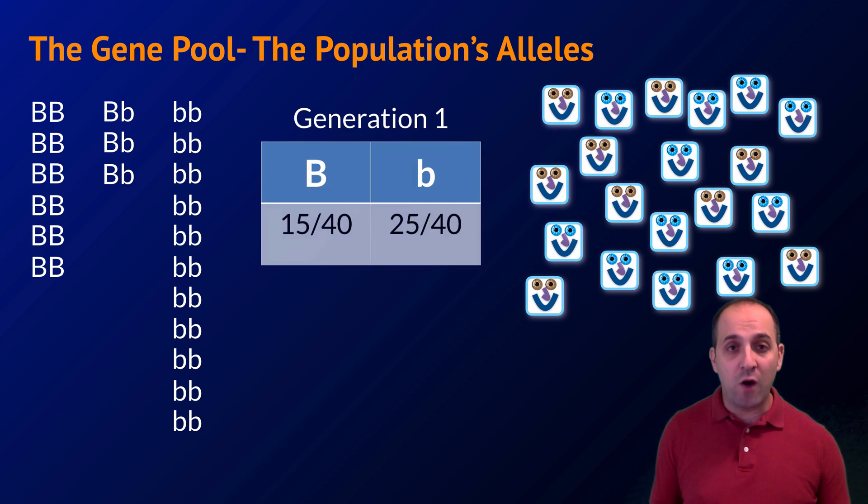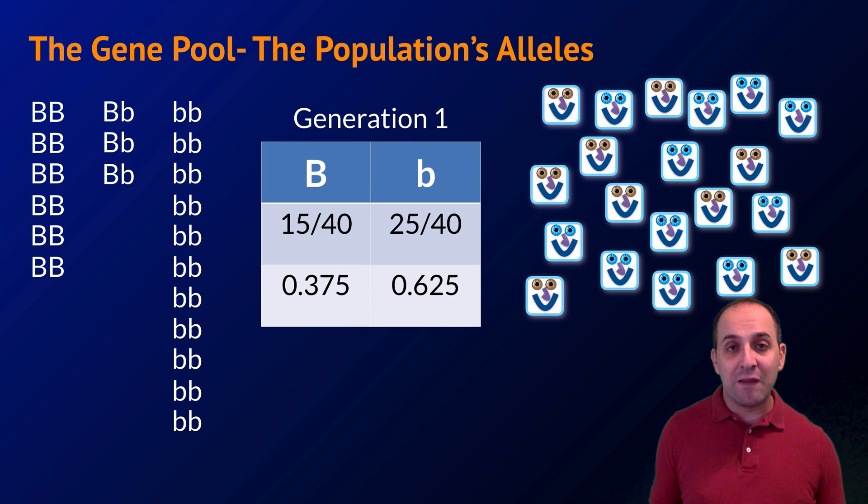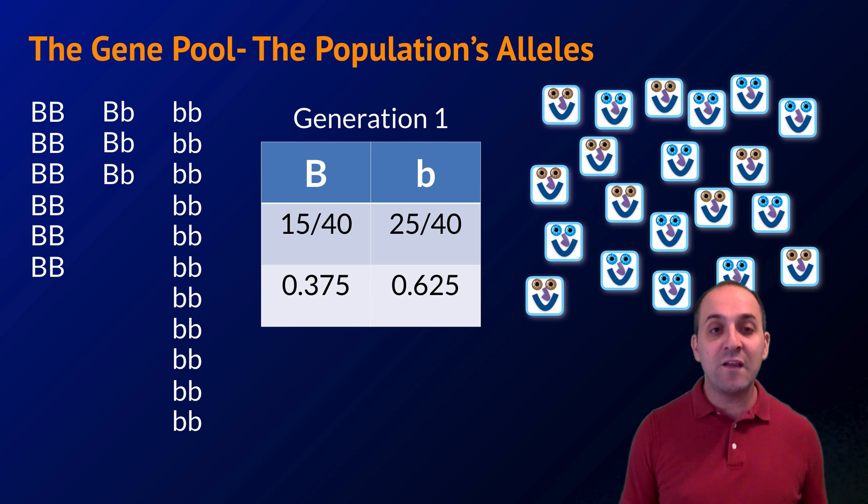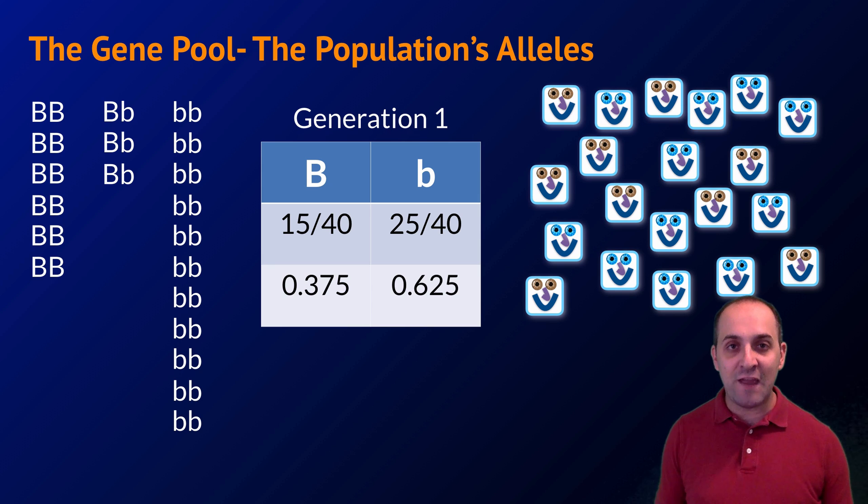I'm going to do some math now and I'll walk you through it. All I'm going to do is list the numbers and frequencies of the big B and little b alleles here in our smiley population during this generation, which we'll refer to as generation 1. We see that there are 15 big B alleles out of the 40 total and there are 25 little b alleles. So the frequency of the big B allele is 0.375, 15 out of 40, and the frequency of the little b allele is 0.625, or 25 out of 40.